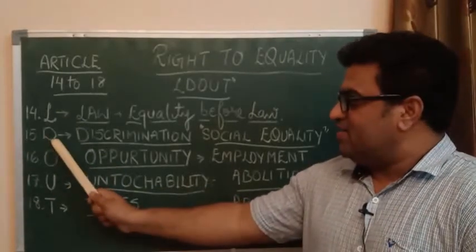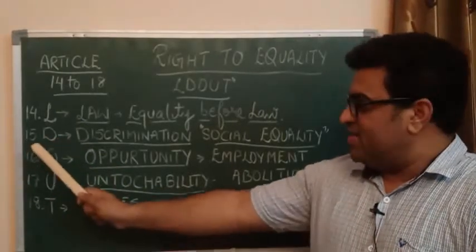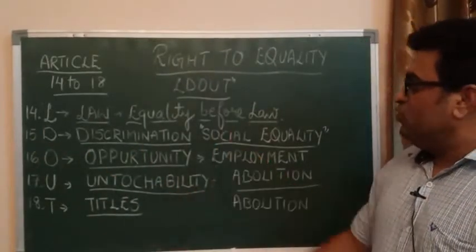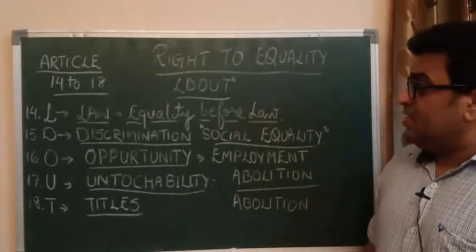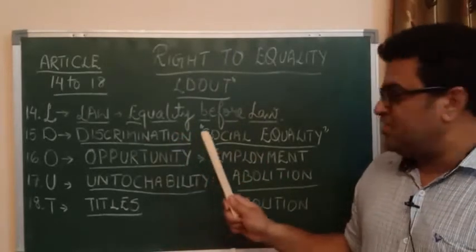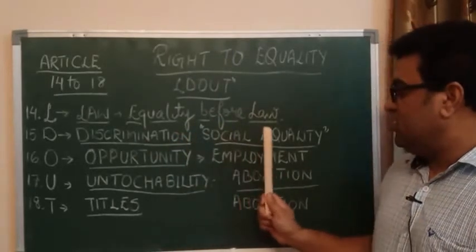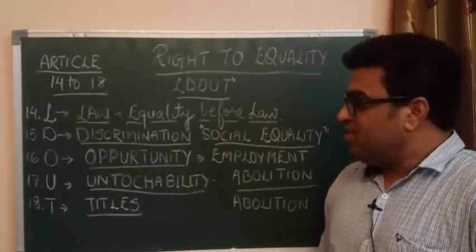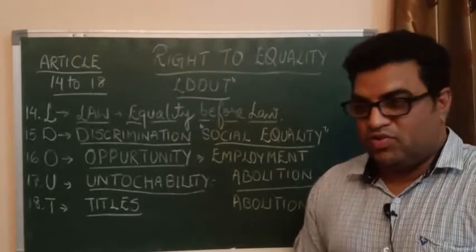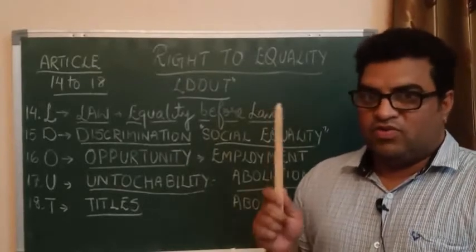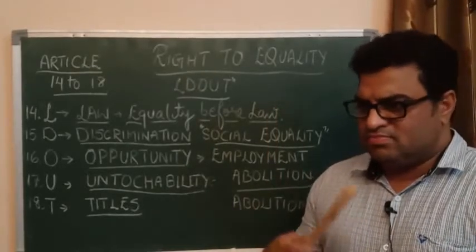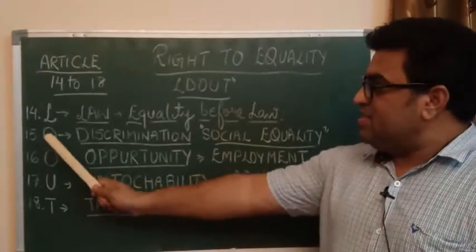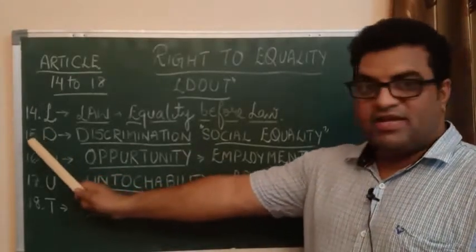The second letter is D. Article 15. D for discrimination. It gives you a right against any sort of discrimination, any sort of social inequality. It means you are having social equality. No one can discriminate you on the basis of your caste, color, creed, gender, or anything. So the letter is D and the article is 15.